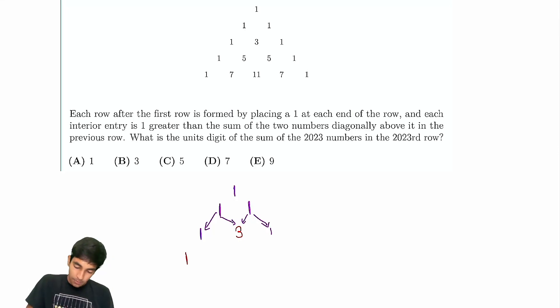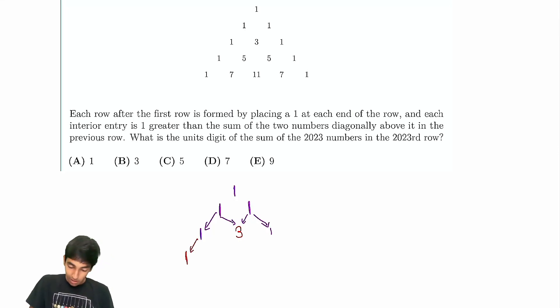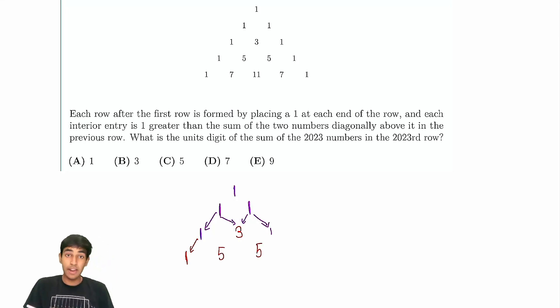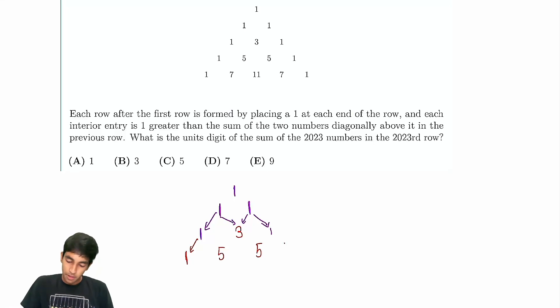And then here we have 1 again, just from extruding. 1 plus 3 is 4, plus another 1, so 5. Same thing over here: 3 plus 1, and then an additional 1 we always add. Then the 1 just extrudes out.